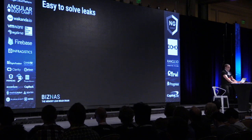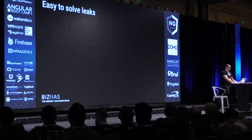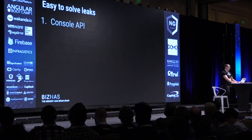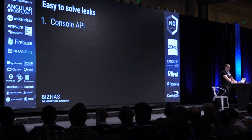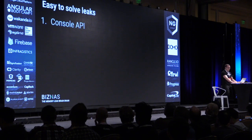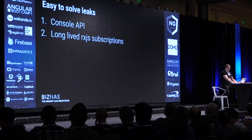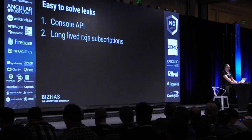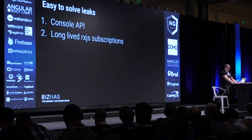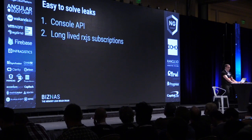There are a couple of easy-to-solve memory leaks you're going to see in Angular applications. The first thing you should always do is turn off the console API when you're trying to track down the memory leak — basically, anything you log to the console is going to stay in memory. The second is long-lived observables: anything you subscribe to, just make sure you unsubscribe. It's a general rule.